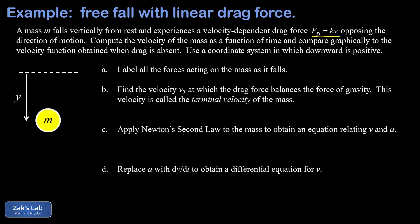I broke this problem down into little pieces to guide us through the solution. The first piece is to label all the forces acting on the mass as it falls. That's simple enough: we have gravity pulling down with a magnitude of mg, and then our drag force opposing the direction of motion with a magnitude of kv.